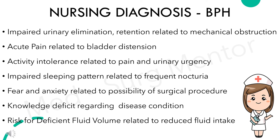Nursing diagnoses for a patient with benign prostatic hyperplasia include: impaired urinary elimination pattern, retention related to mechanical obstruction, acute pain related to bladder distension, activity intolerance related to pain and urinary urgency, impaired sleeping pattern related to frequent nocturia, fear and anxiety regarding the possibility of surgical procedure, knowledge deficit regarding disease condition, and risk for deficient fluid volume related to reduced fluid intake.